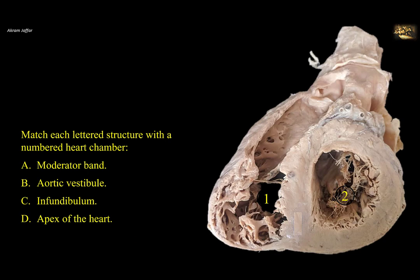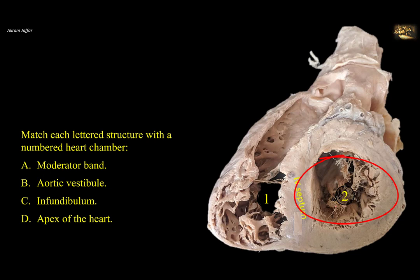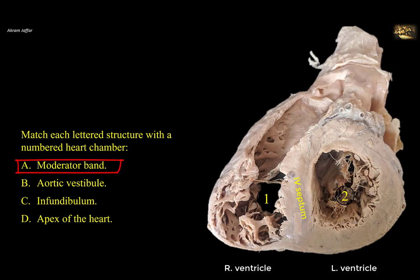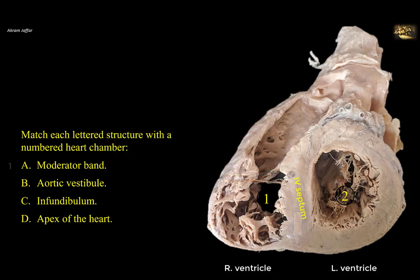Match each lettered structure with a numbered heart chamber. This is a cross-section of the heart passing through the right and left ventricle. Note that the cavity of the thinner-walled right ventricle is flattened and becomes crescentic by the forward bulge of the interventricular septum, while the section of the left ventricle is circular. The interventricular septum has the thickness of the left ventricle. Thus, marker 1 is in the right ventricle, and marker 2 is in the left ventricle. A is the moderator band — a ridge of cardiac muscle fibers that lies in the cavity of the right ventricle — so A goes with 1.